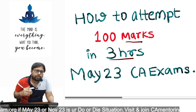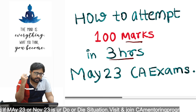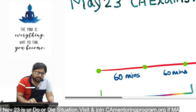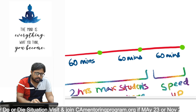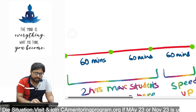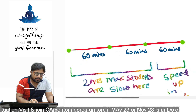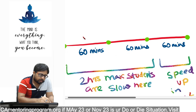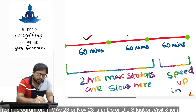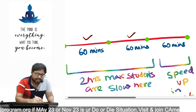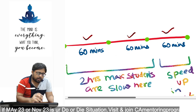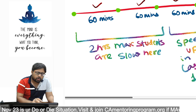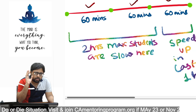We get three hours to write the paper. I divide it into three slots — slot number one: 60 marks, slot number two: 60 marks, and the last slot: 60 marks. What I find is that the maximum number of students are very slow in the first two hours.